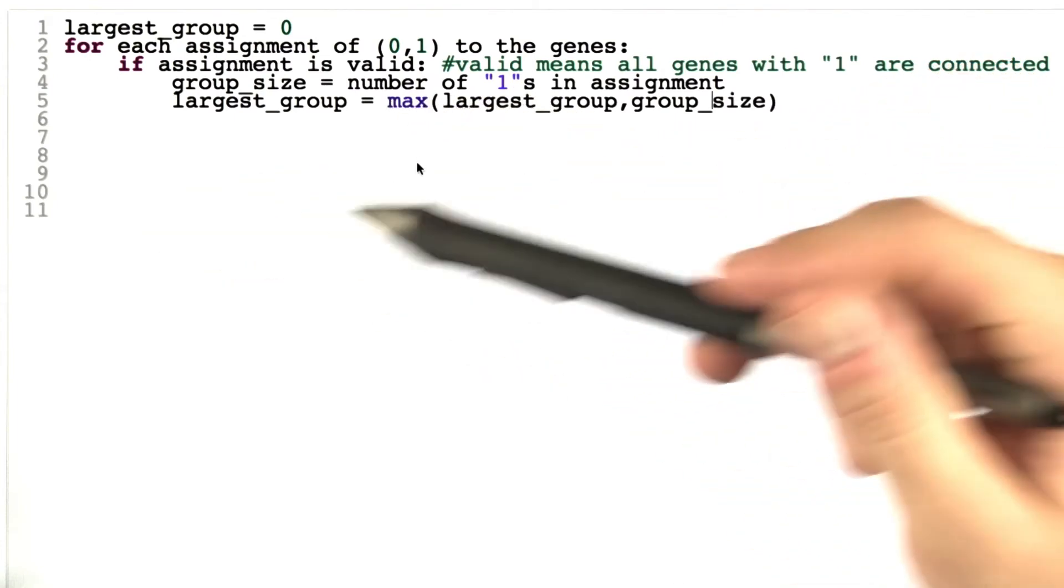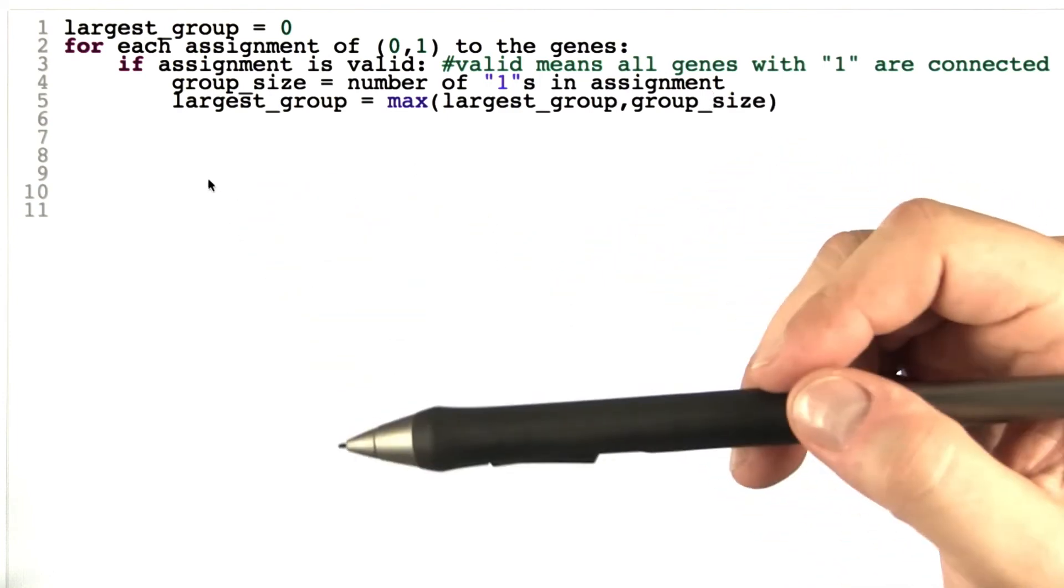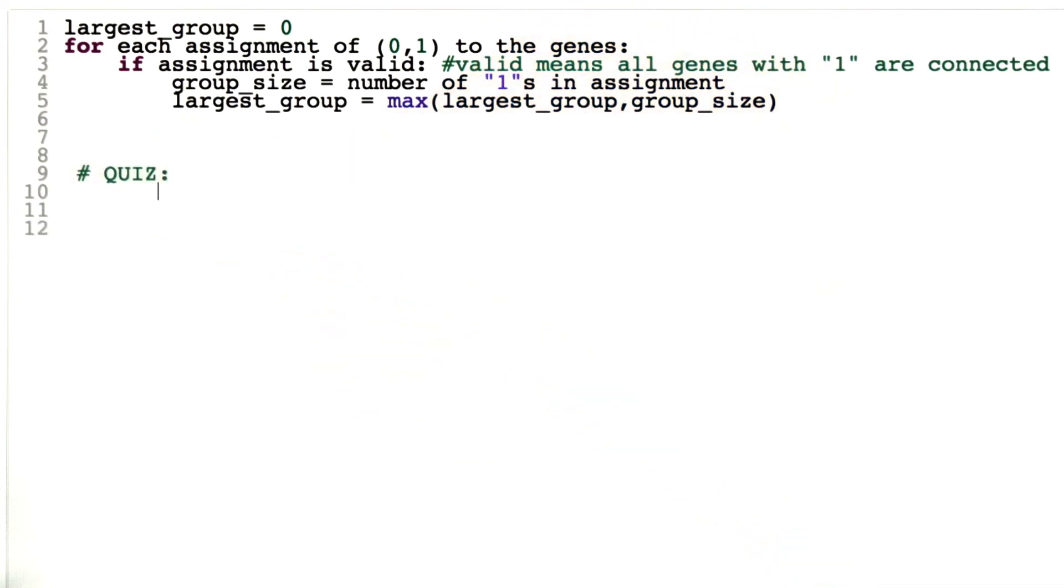Since the algorithm is so similar to Alice's, I think it should be rather easy for you to figure out our next quiz. And of course, that quiz is going to be to determine the running time of Bob's algorithm.